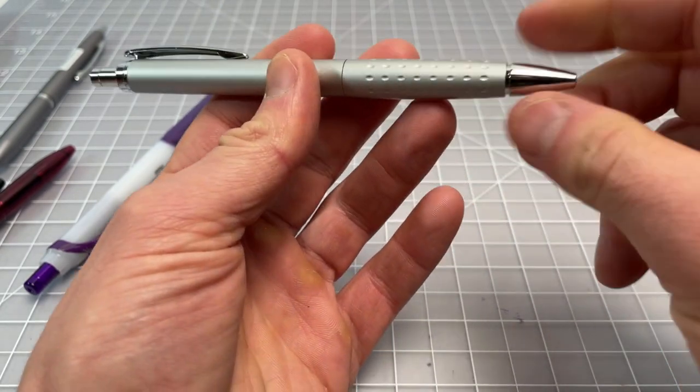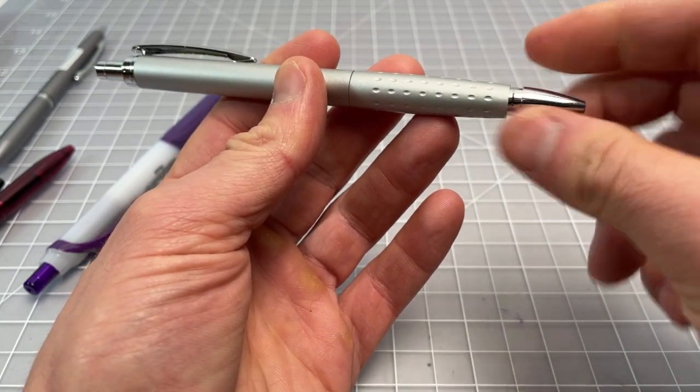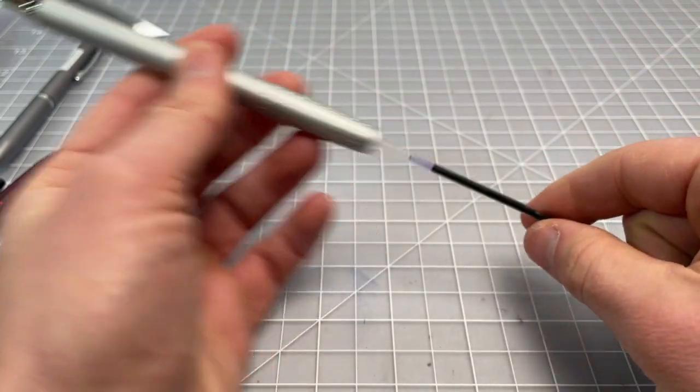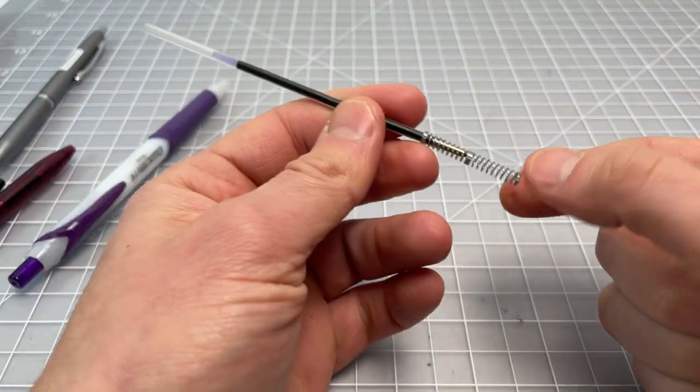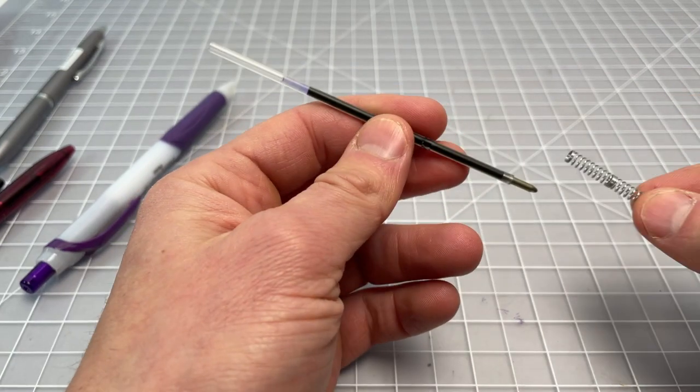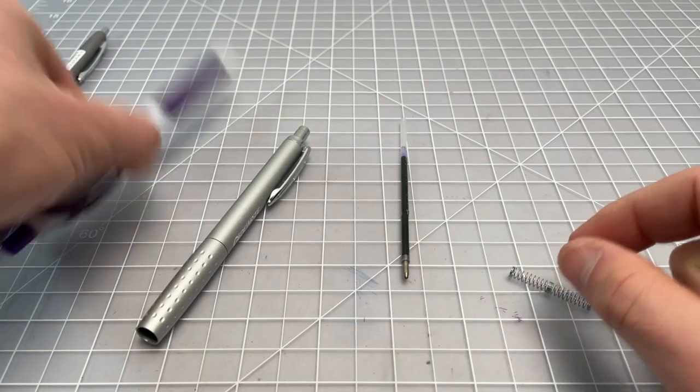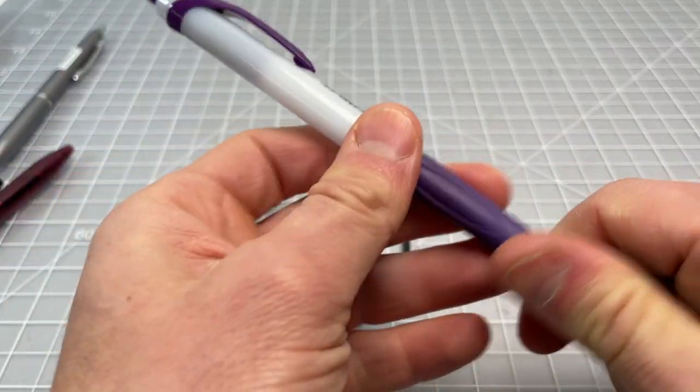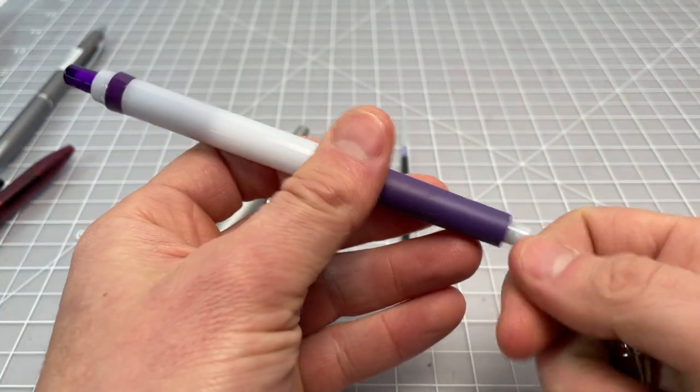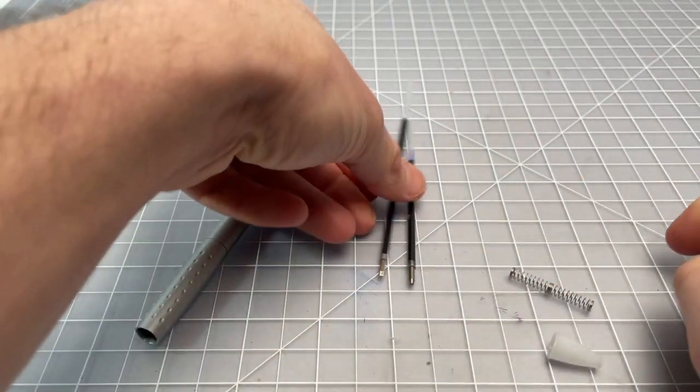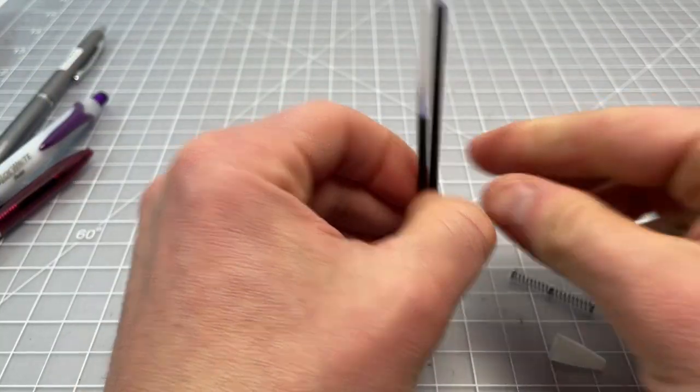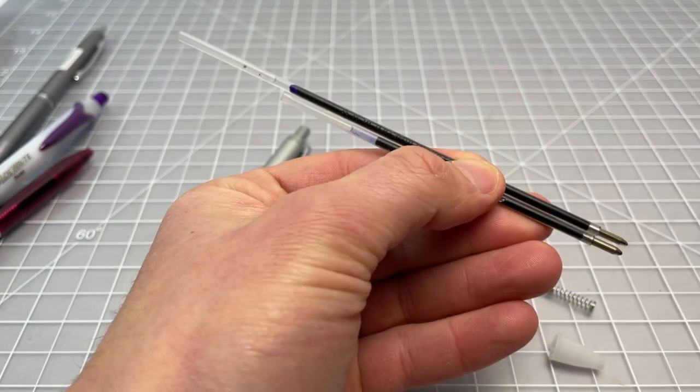This one is also refillable. You also pull off or turn off this front piece and this is not pressure fit. So we see a really nice hefty spring in there and then the refill. The refill's a little shorter.